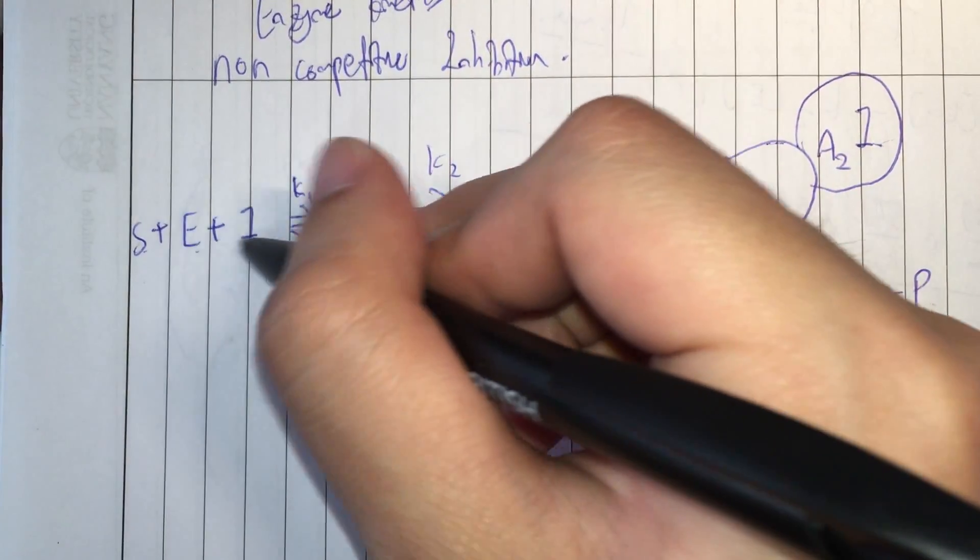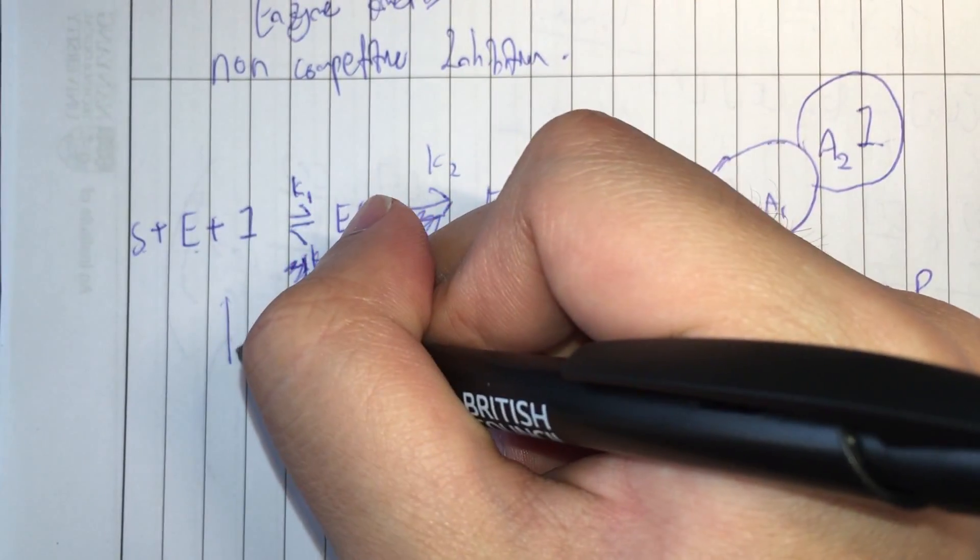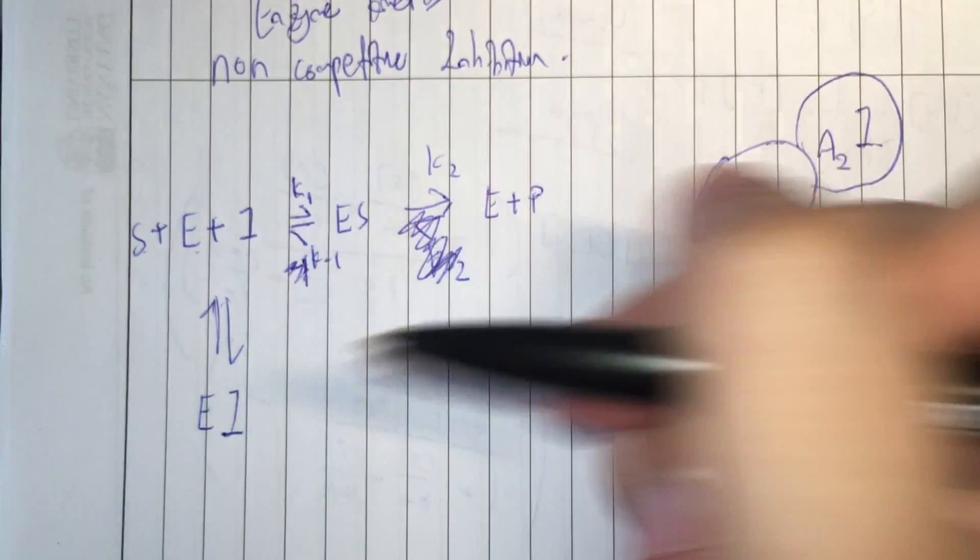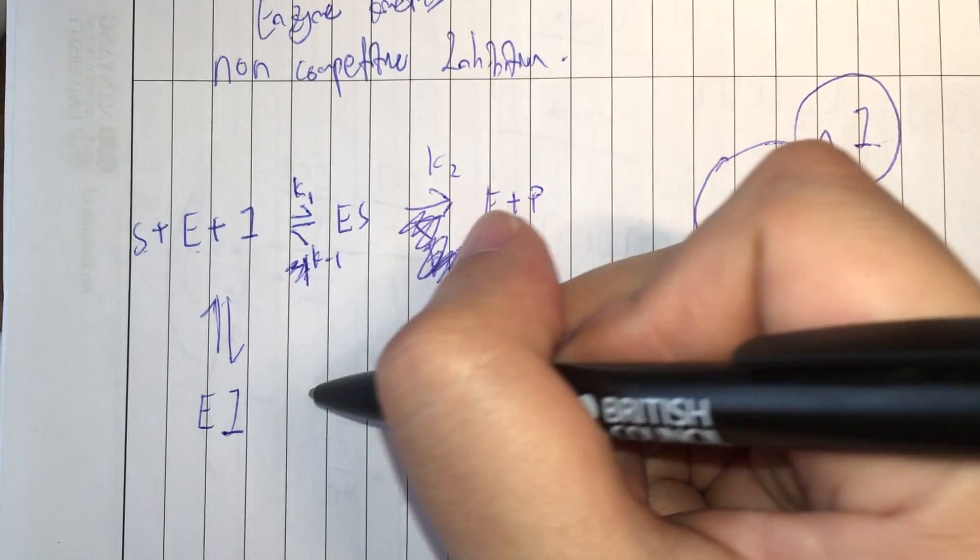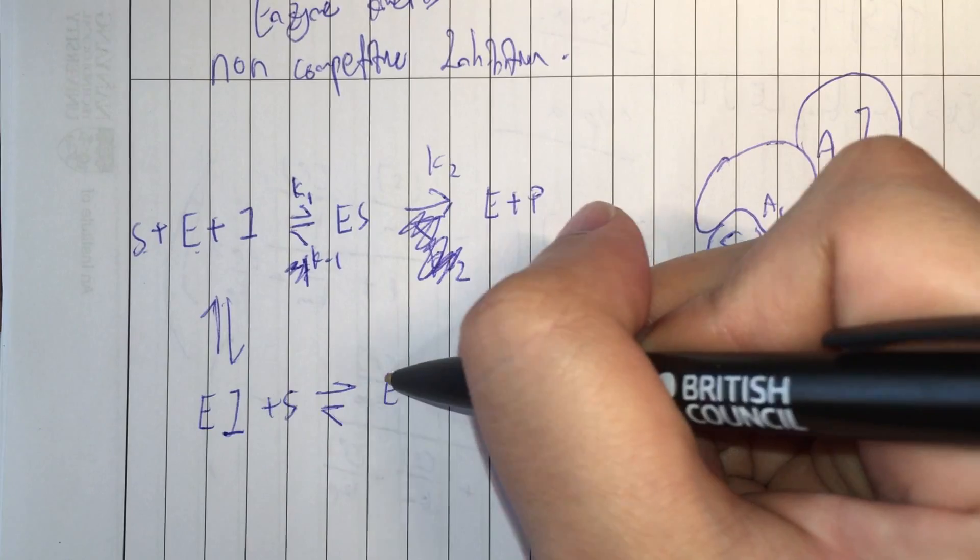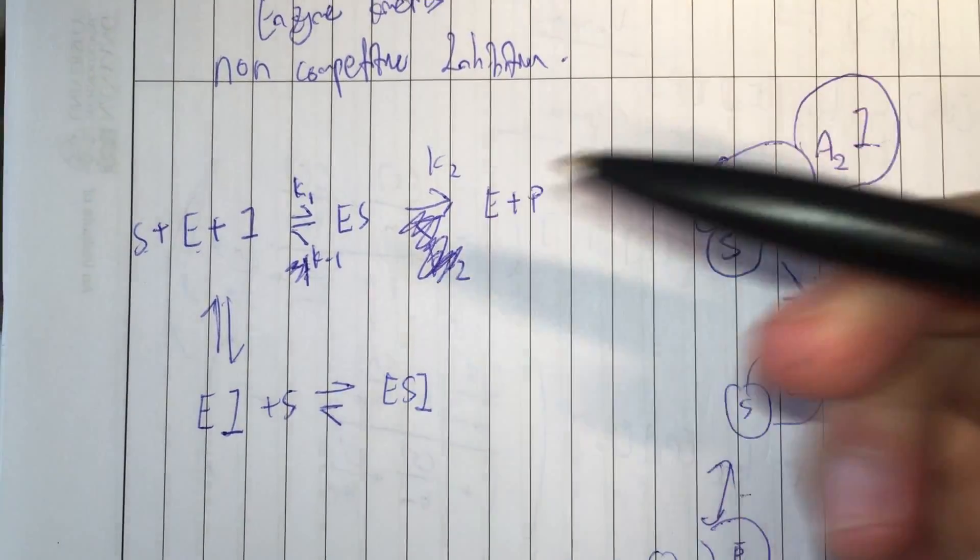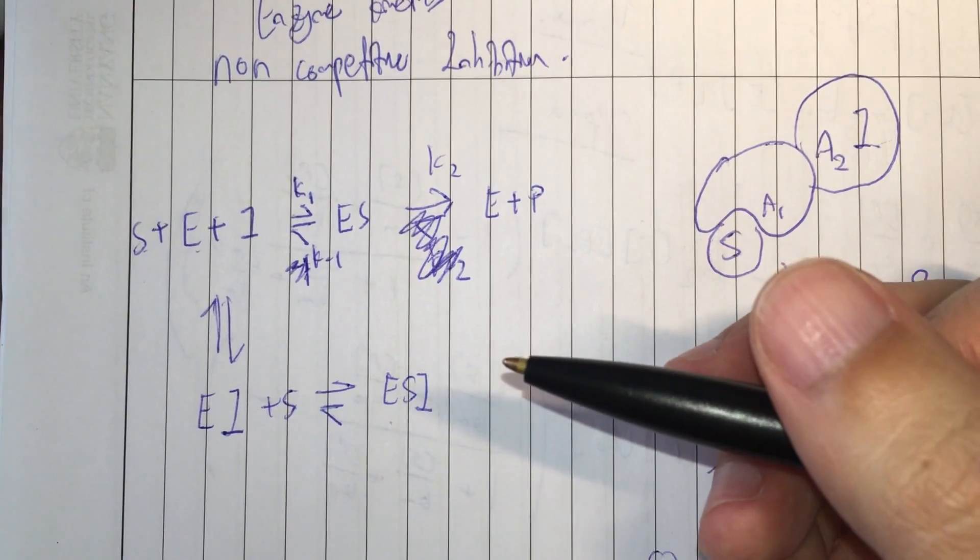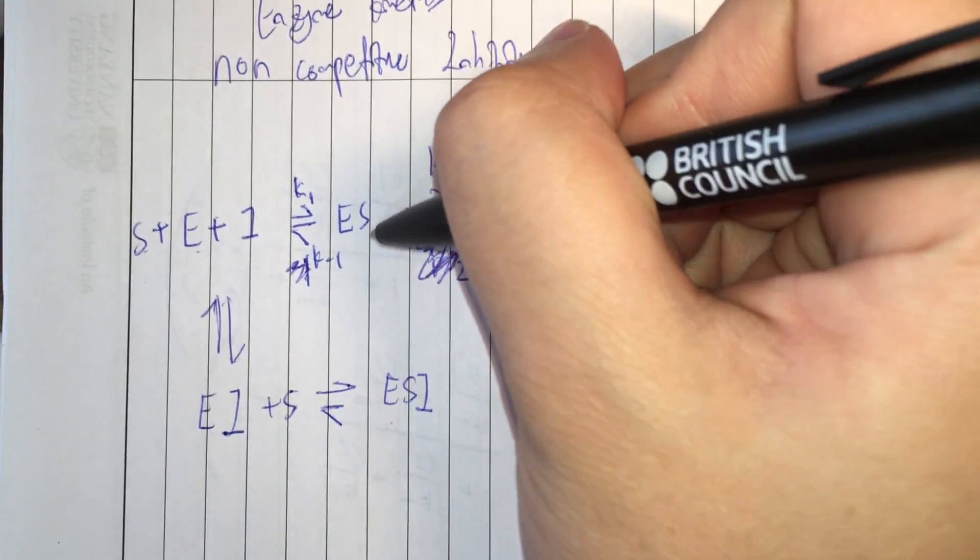Now this can form the enzyme inhibitor complex, EI. And this EI, as explained earlier, can bind with the substrate to form ESI.